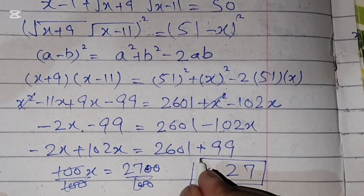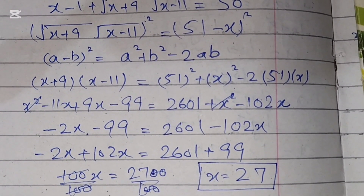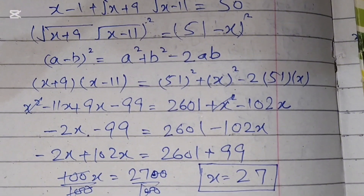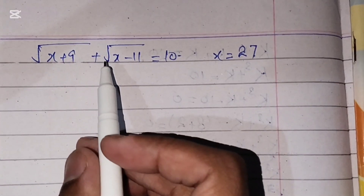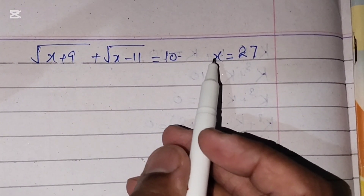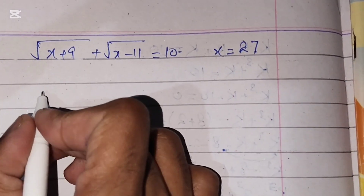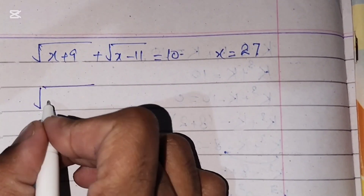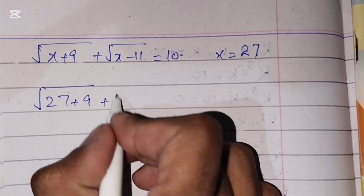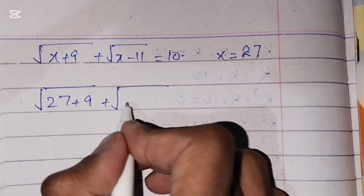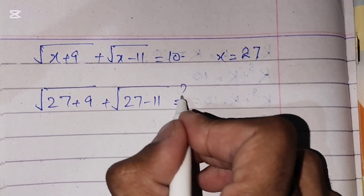So we find the value of x equals 27. Now we will put this value of x into our given question for verification. It will be: square root of (27 + 9) plus square root of (27 - 11) equals 10.